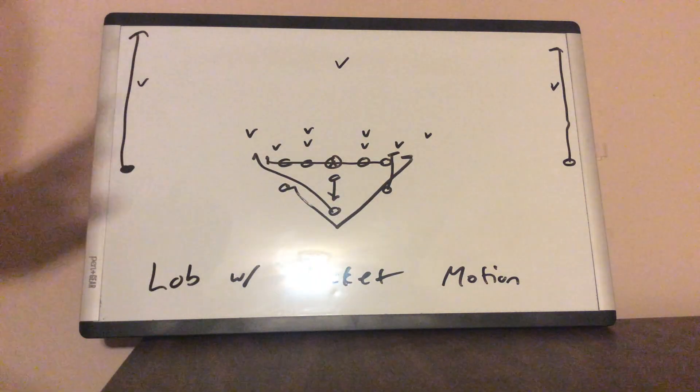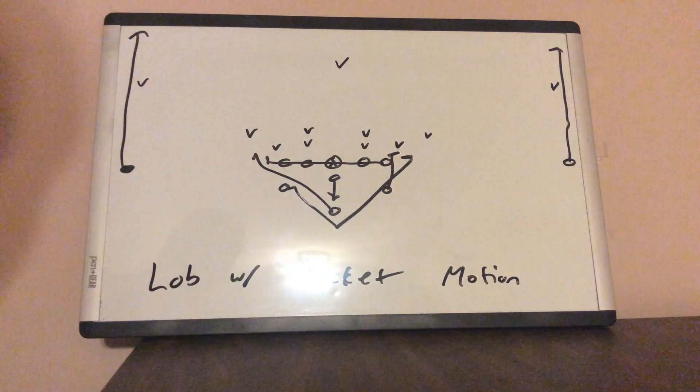You want to throw away from the motion because oftentimes you get a rotation when they see rocket motion. All the receiver's going to do is run straight up the field.